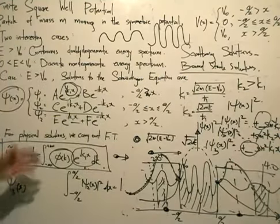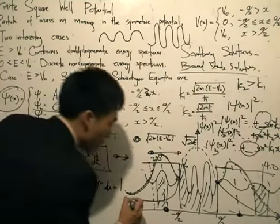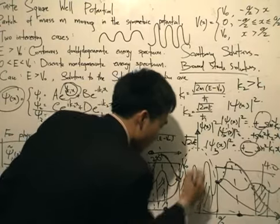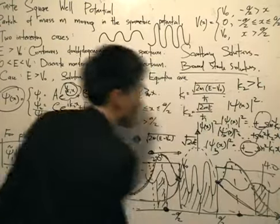Or maybe if we use the Gaussian wave packet, we might get a function such as this over here and oscillate again and decay such as like that.